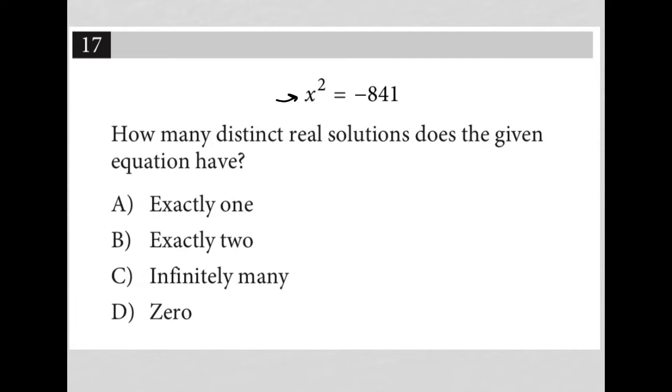There's no value once squared that will give you a negative number, right? Because a negative number times a negative number—and I'll just write it this way—a negative number squared is positive as well as a positive number squared is positive.